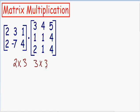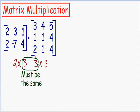In order to multiply two matrices together, the columns in the first matrix must equal the rows in the second matrix. So in other words, these two inside numbers must be the same. It's really important to check this before you multiply matrices — if these two inside numbers are not the same, you cannot multiply the two matrices.